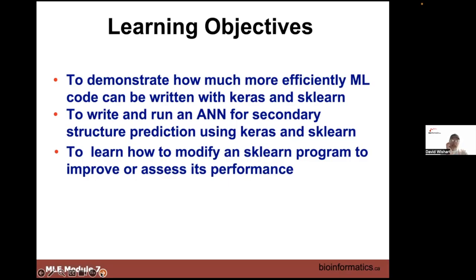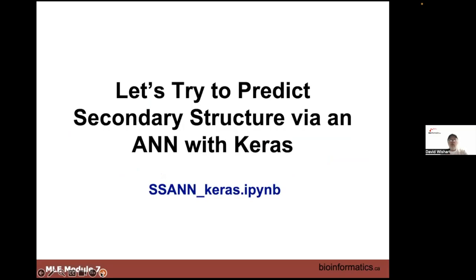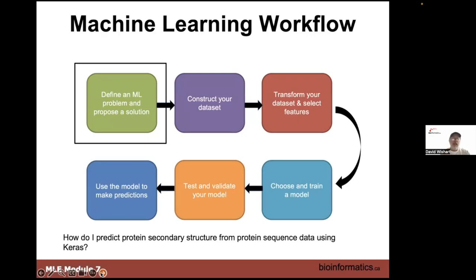The last module we did yesterday was Module 4, where we used machine learning with neural nets but didn't really use decision trees. In that case the Keras module was going to be most useful. The program we're going to develop is called 'Secondary Structure with Artificial Neural Nets via Keras' — it's in Python and is mostly an extension of what we've done with the iris stuff. This module will be relatively short — we've scheduled an hour but will probably be done in about 35 or 40 minutes.